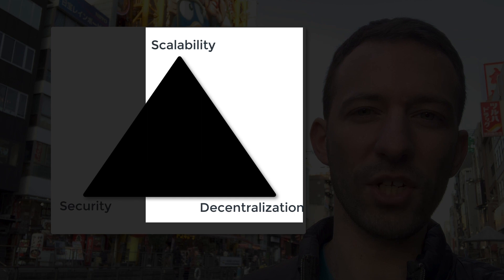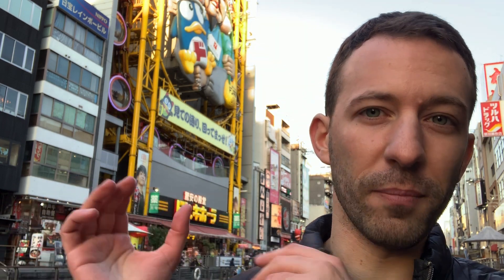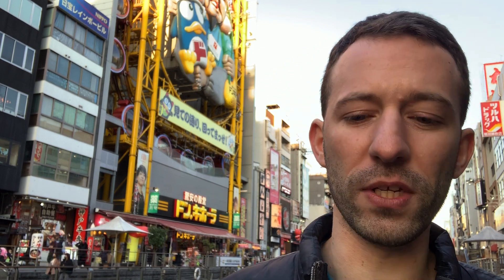The next combination is decentralization and scalability, and there isn't any existing example of this. One approach would be to tweak the consensus algorithm — specifically, reducing the block time, which is the average time between two blocks, to squeeze more transactions per unit of time. However, this creates more temporary forks, where different miners in different parts of the world find a block at exactly the same time, causing the blockchain to temporarily diverge into multiple branches before the network converges on a single version in what's called a blockchain reorganization.